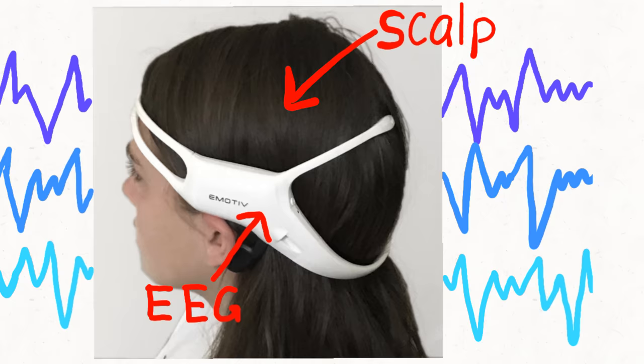If we want to understand EEG better, we need to understand how our brain works. With billions of neurons or nerve cells, our brain is the control center of our body and thoughts.